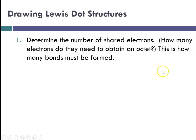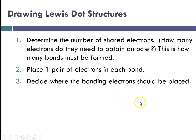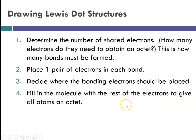This is how many bonds must be formed. And we're talking about covalent bonds here, so carbon needs to bond with, form 4 bonds. Bond with either 4 things or somehow form 4 bonds. So what you do is you place a pair of electrons in each bond and decide where these bonding electrons should be placed around that atom. And then fill in the molecule with the rest of the electrons, if there are additional electrons, to give all of the atoms an octet.